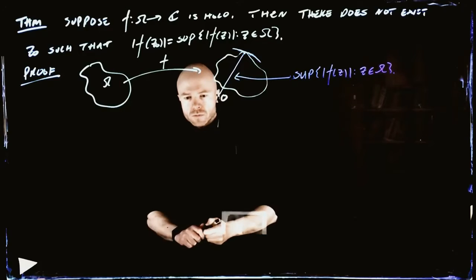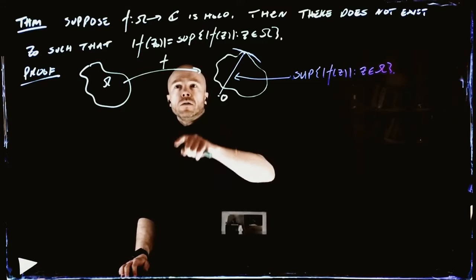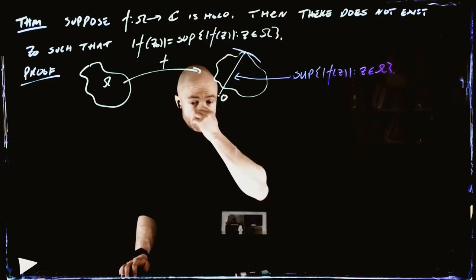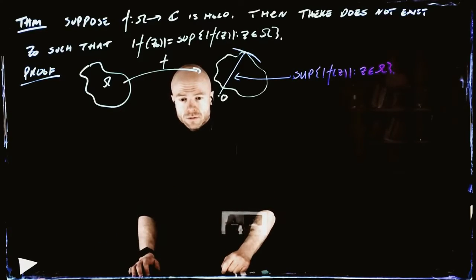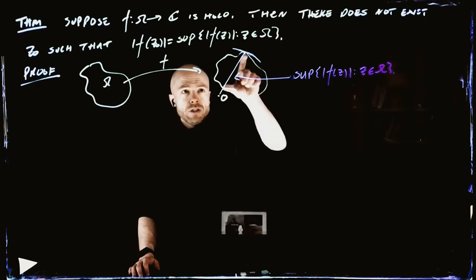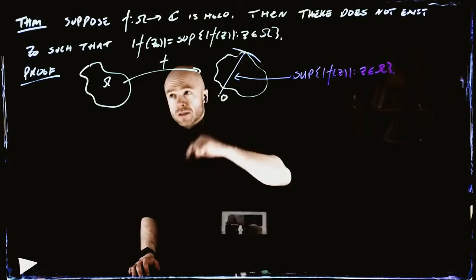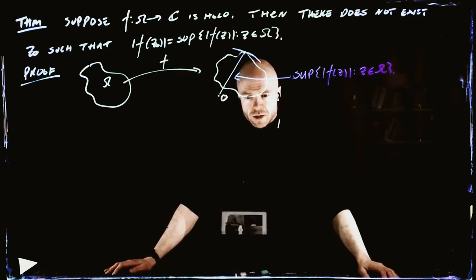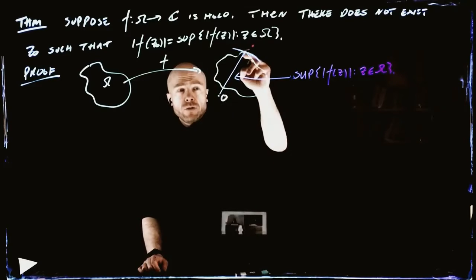So this thing would be the supremum. Our claim is there exists no Z0 which achieves this thing. So suppose that wasn't true — that means we have some Z0 that achieves this, and it might occur in numerous places. There could be more than one place which achieves this, but in our picture I've just drawn one. So if there exists a Z0 such that this is true, where is F of Z0? It would have to be here.